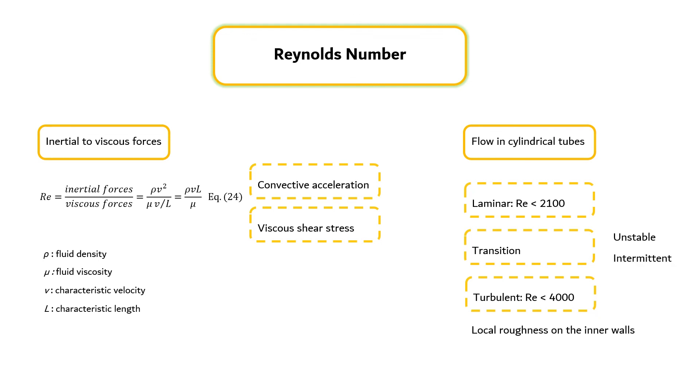Besides roughness, the onset of turbulence is influenced by local changes in geometry, such as constrictions and bends.